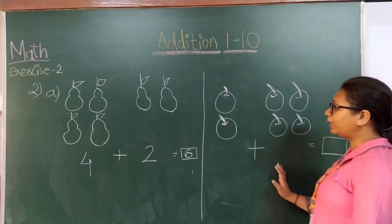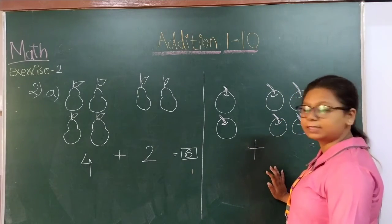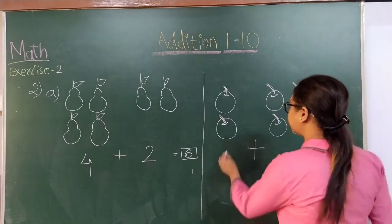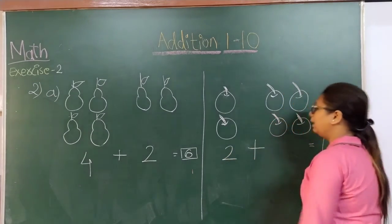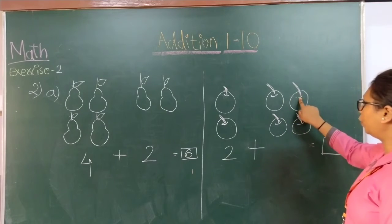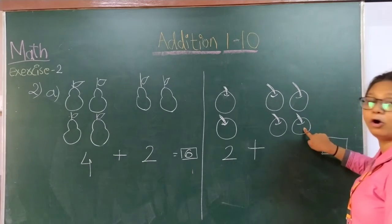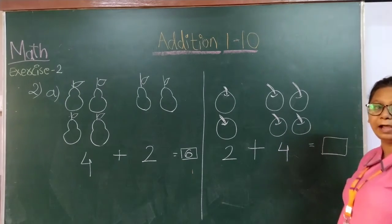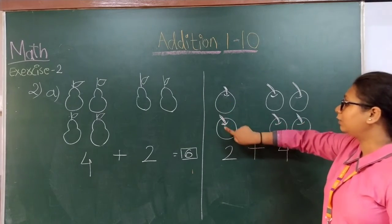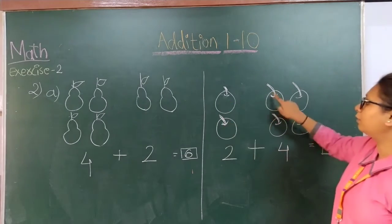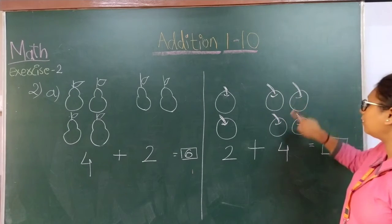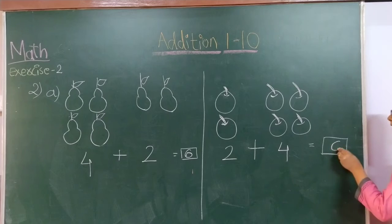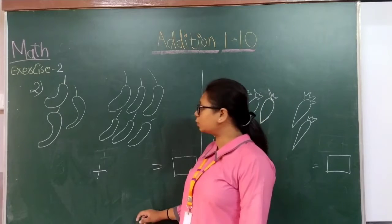Next one. How many tomatoes can you spot in the first one? 1 and 2 — so 2 over here. And 1, 2, 3, 4 — so 4 over here. So 2 plus 4 makes it: 1, 2, 3, 4, 5 and 6 — how many? 6.